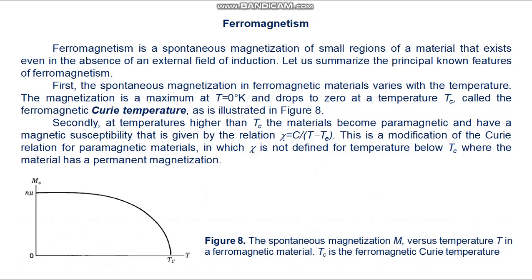Ferromagnetism is the spontaneous magnetization of small regions of a material that exists even in the absence of an external field. The principal known features of ferromagnetism: first, the spontaneous magnetization varies with temperature — it is maximum at T equals zero Kelvin and drops to zero at the ferromagnetic Curie temperature T_c (figure 8). Second, above T_c the material becomes paramagnetic with susceptibility χ equals C divided by (T minus T_c), a modification of the Curie relation in which χ is not defined below T_c where the material has permanent magnetization.